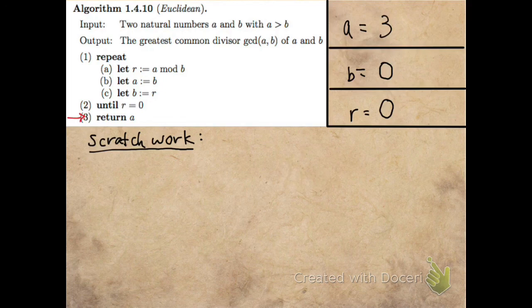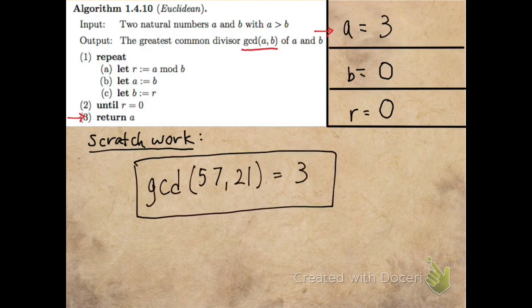which is the last step, which is to return the current value of A. Remember, we're outputting the GCD of A and B, the inputs, and this output is the GCD. So it's 3. The greatest common divisor of 57 and 21 is 3.